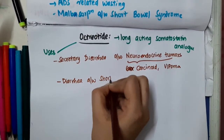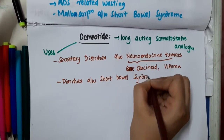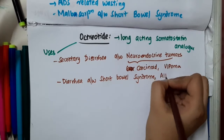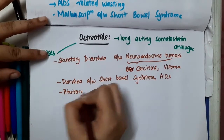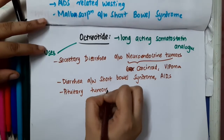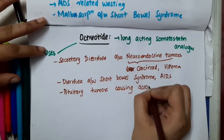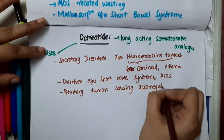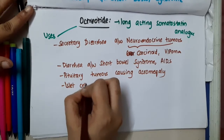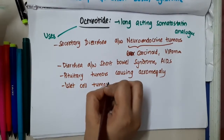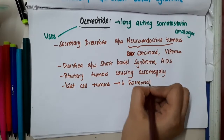Octreotide is also used in diarrhea associated with short bowel syndrome and in AIDS. It is also used in pituitary tumors causing acromegaly. Additionally, it is used in islet cell tumors to reduce hormonal secretion.